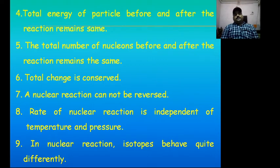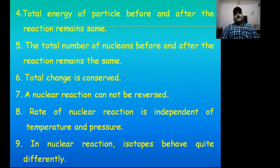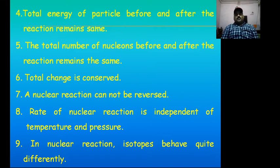Fourth characteristic: the total energy of particles before and after reactions remains the same. The total number of nucleons before and after reactions remains the same. The total charges which take place or occur in a nuclear reaction is conserved. A nuclear reaction cannot be reversed. The rate of nuclear reaction is independent of temperature and pressure. In nuclear reactions, isotopes behave quite differently.